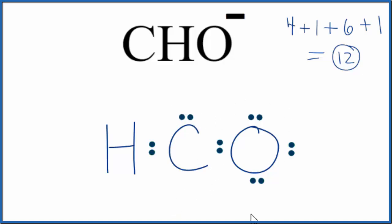At this point, the oxygen has an octet. The hydrogen only needs two, but that central carbon only has six. Let's move these two here to form a double bond. So now, the oxygen still has 8. The carbon now has 8. So this is the Lewis structure for CHO minus.